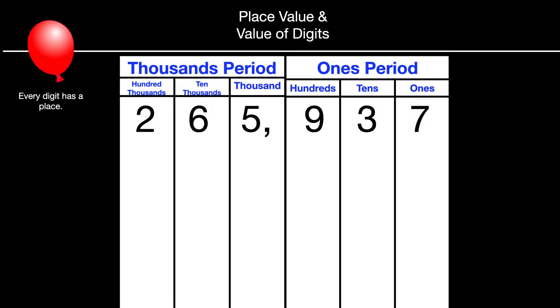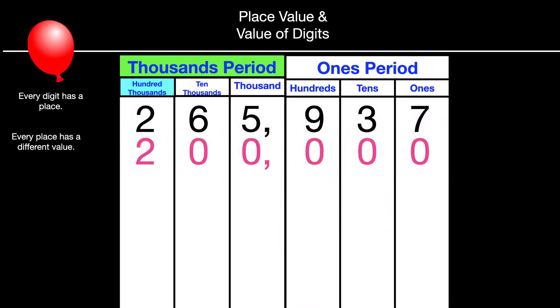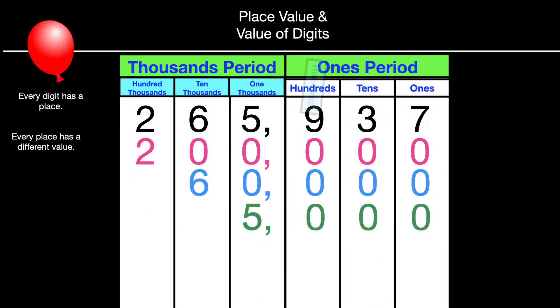All of those digits have a place or a place value, and each place has a different value. So, for example, in the thousands period, the hundred thousands, that 2 has a value of 200,000. In the ten thousands, the 6 has a value of 60,000. The 5 has 5,000, and that pattern would continue through the hundreds, the tens, and the ones.